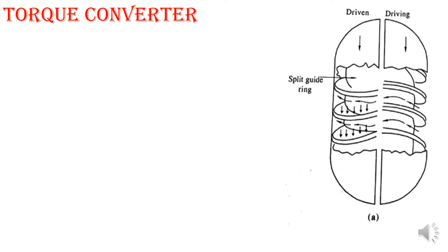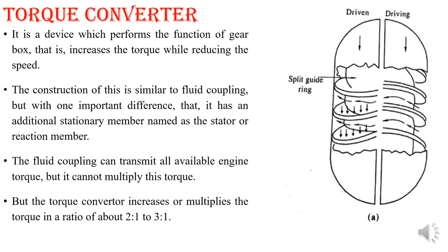Next we have the torque converter. The torque converter is similar to the fluid coupling, but the difference is that fluid coupling only transfers the same amount of torque from one shaft to the other — there is no multiplication of torque. In the torque converter, one additional component is added: the stator, also called the guiding blade. With this stator, the torque converter can multiply torque — in a ratio of 2:1 or 3:1 — along with transmitting it. This is the main advantage of the torque converter compared to fluid coupling.